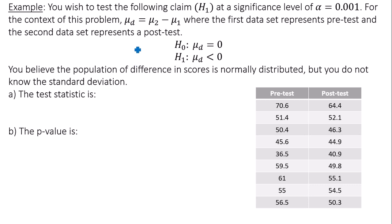You wish to test the following claim, the alternative hypothesis H1, at a significance level of alpha equals 0.001. For the context of this problem, the mean difference equals the mean of group 2 minus the mean of group 1, where the first data set represents pre-test and the second data set represents post-test.